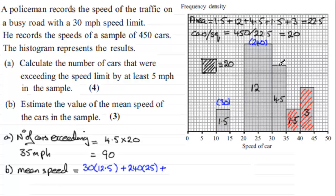So we would add to this 240 vehicles going at 25 miles per hour. And then we have to do much the same for each of these blocks here. Number of vehicles in this block is 4.5 times 20 which is 90 vehicles.